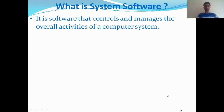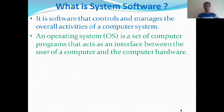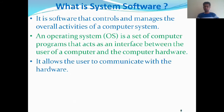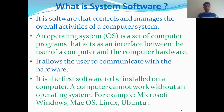System software is software that controls and manages the overall activity of a computer system. The operating system, or OS, is a set of computer programs that act as an interface between the user and the computer hardware. It allows the user to communicate with the hardware and is the first software to be installed on a computer — a computer cannot work without an operating system. Examples include Microsoft Windows, Mac OS, and Linux.